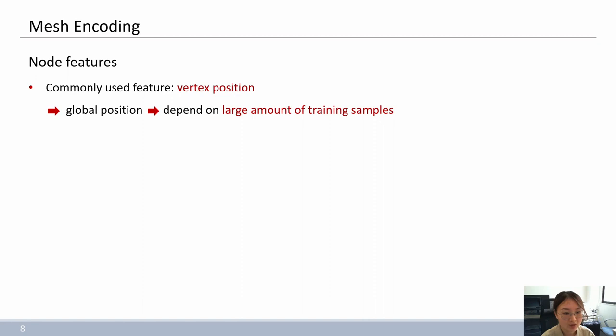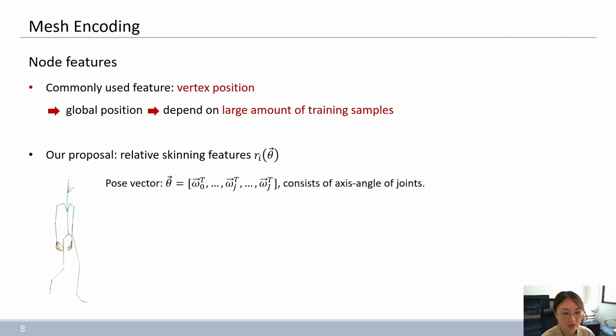To this end, we propose our relative skin features to concisely express deformations in different poses independent of spatial position. Specifically, the transformation of the pose is encoded with pose vector theta, which is defined by axis angle of rotation of joint. Next, this axis angle for every joint can be transformed through a rotation matrix using Rodrigues' formula.